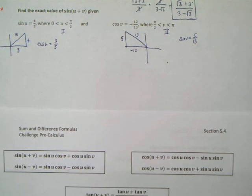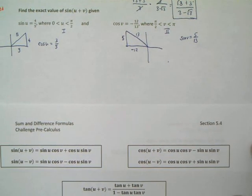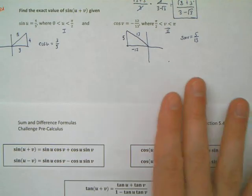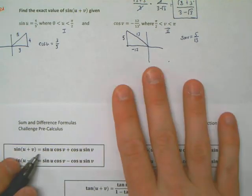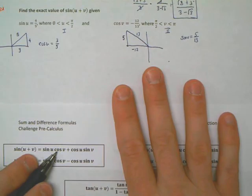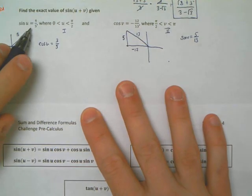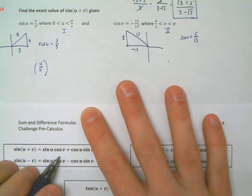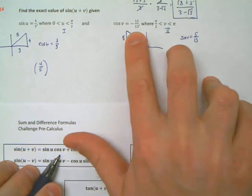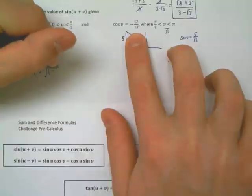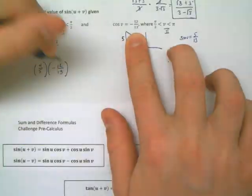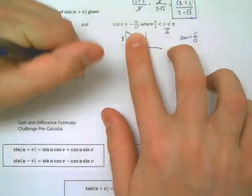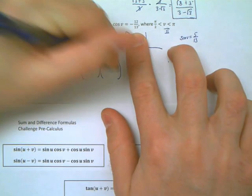Now, they wanted us with this information to find sine of u plus v. So I come back and I bring up my formulas here, and of course, at some point in time, you need to memorize these. But for the time being, we're practicing, so we're going to go ahead and use our cheat sheet. The sine of u plus v is sine u cosine v plus cosine u sine v. So sine u, they give to me,